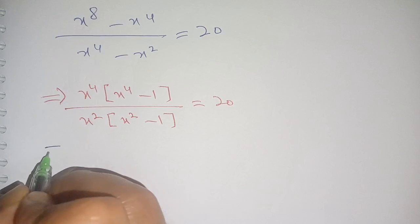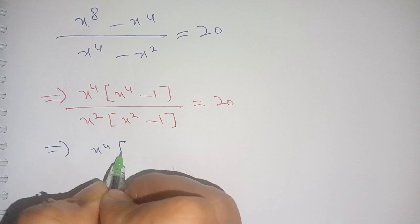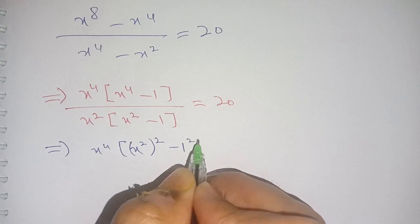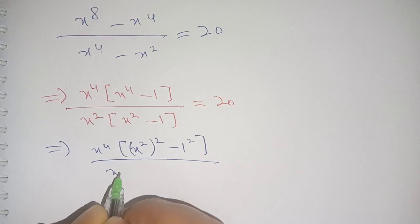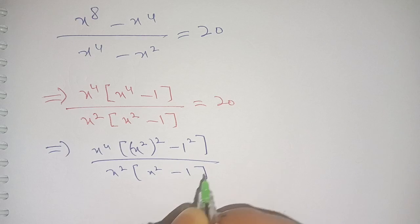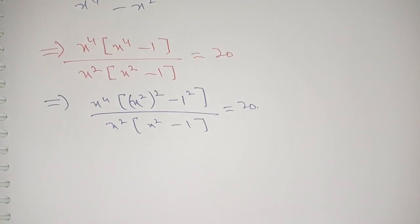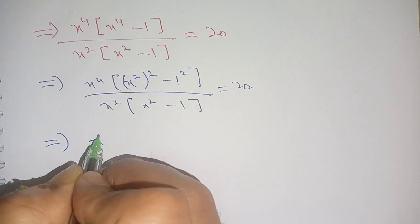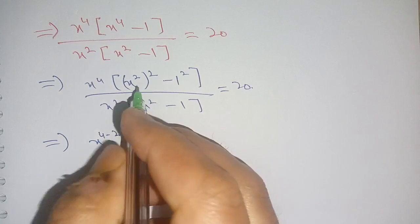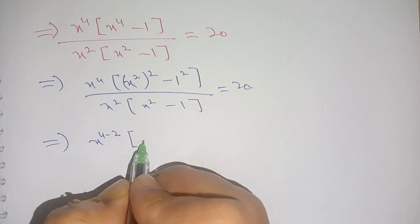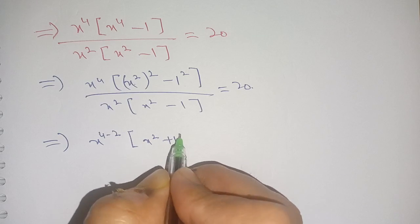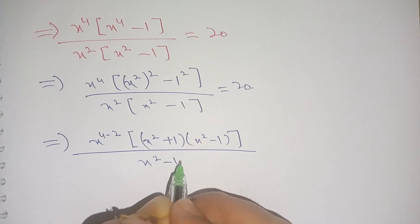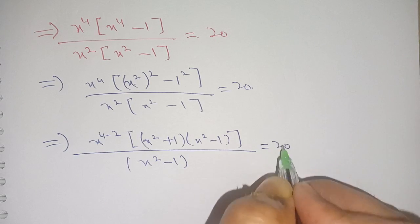In the next step we have x⁴ times — we can write x⁴ as (x²)² — so we get ((x²)² - 1²) divided by x²(x² - 1) is equal to 20. Now x⁴ - 1 is a difference of squares: it becomes (x² + 1)(x² - 1) divided by x²(x² - 1) is equal to 20.